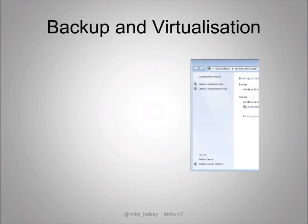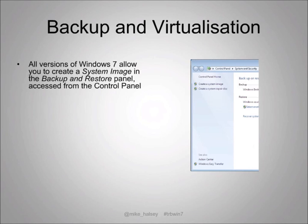Another way to minimize troubleshooting problems is to keep backups of your machine. You can create a system image in every single edition of Windows 7 by selecting Backup and Restore from the Control Panel, or by typing 'backup' into the search box in the Start menu. On the screen, in the blue panel on the left-hand side, there's a link to create a system image, and also a link to create a system repair disk — I'll talk about those a little more shortly.